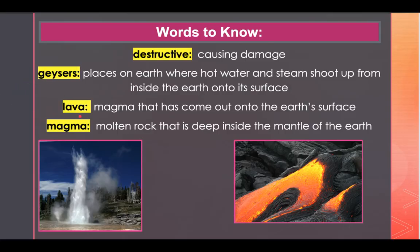Our next word to listen for is 'lava.' Lava is magma that has come out onto the earth's surface. An example of this is: after the lava rushed down the mountainside, it began to cool and harden.